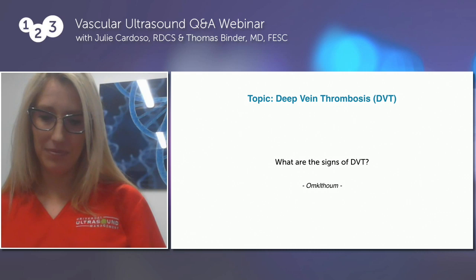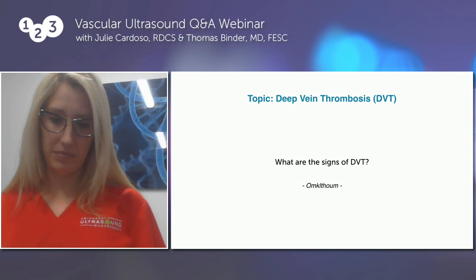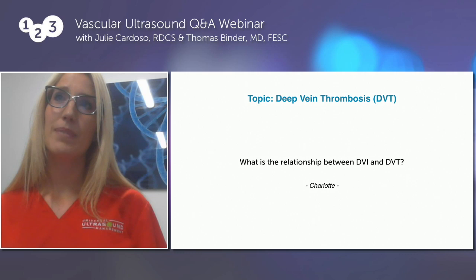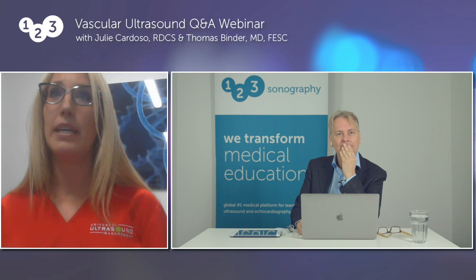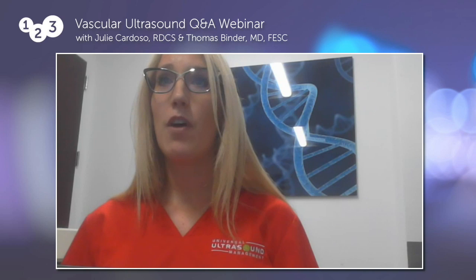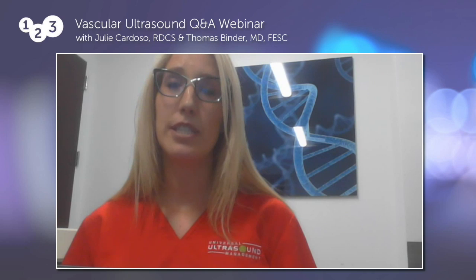Let's go to another question on the topic of deep vein thrombosis, posted by Omlik Tom: what are the signs of DVT? There are two ways to define signs — the clinical signs the patient presents with, such as unilateral swelling, bilateral pain, or calf pain. As far as ultrasound signs, we utilize B-mode, color, and Doppler to answer the question of whether this is a deep vein thrombosis and what stage it's in.